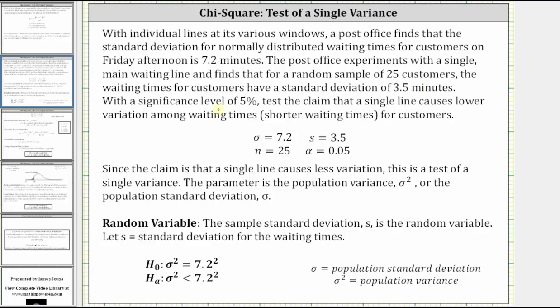Let's first state the given information. The population standard deviation is 7.2 minutes. The sample size n is equal to 25. The sample standard deviation is 3.5 minutes. And alpha is equal to 0.05.